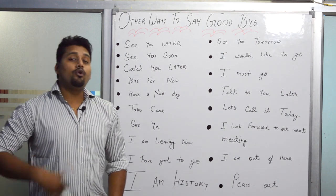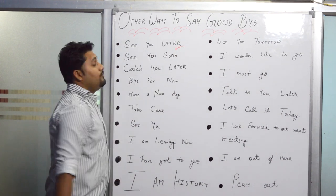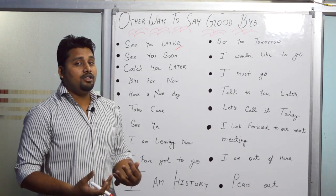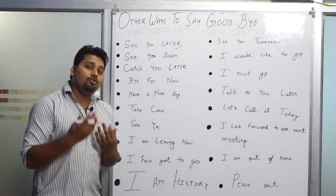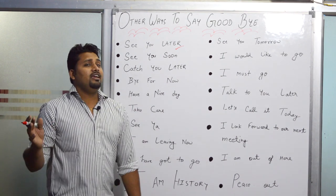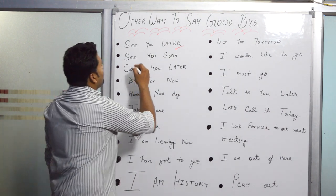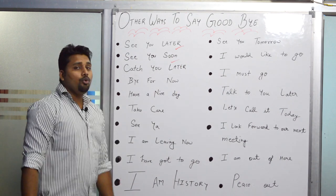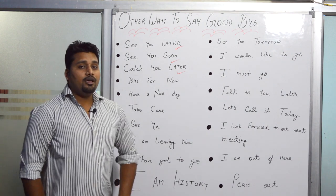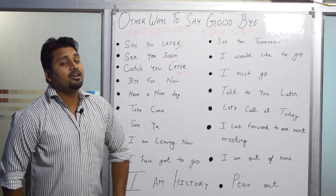We will focus on them one by one. The first word is 'See you later' — this is an informal way which you use with your friends. For example: 'See you later guys,' 'See you friends tomorrow.' You can also say 'See you soon' or 'Catch you later.' These three are informal ways which we use with friends.